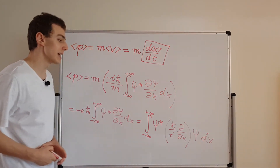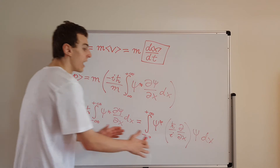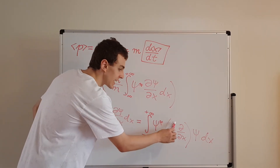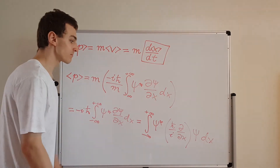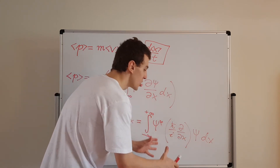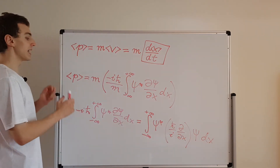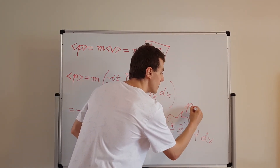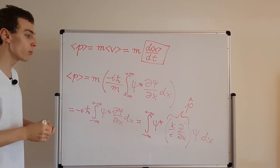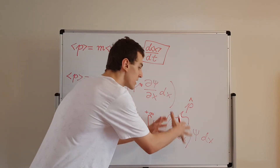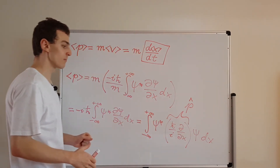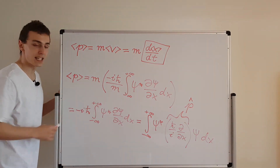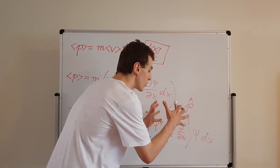This is also the expectation value of the momentum. All I did was isolate the stuff in the middle and move the constants towards the inside. You might see it in the form of minus i h-bar, or as h-bar over i — those are equivalent. This integral sandwich is actually relating the momentum operator to the expectation value of momentum. The thing in the middle we can call the momentum operator — I'll put a little hat on top. That is the operator that represents momentum, forming all the goodness inside this integral sandwich.